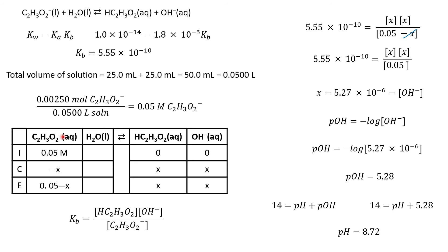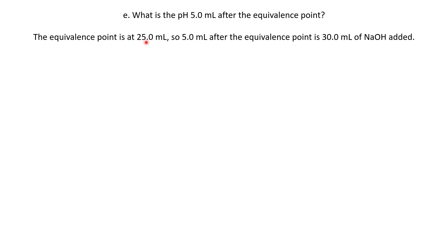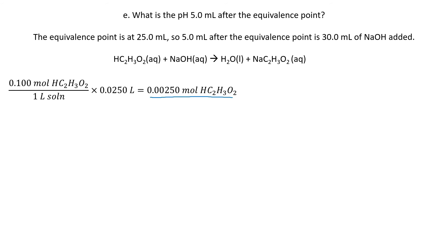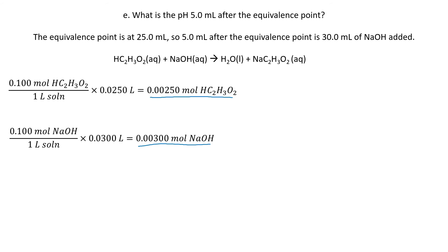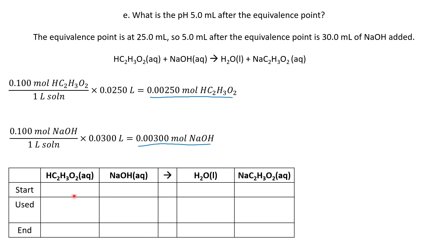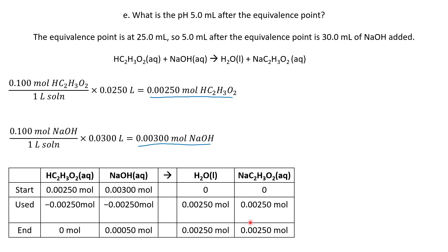What happens to pH after the equivalence point? We go 5 milliliters after — the equivalence point was at 25 milliliters, so we've added 30 milliliters of sodium hydroxide. Putting up my balanced chemical equation: I started with 0.0025 moles of acetic acid. How many moles of sodium hydroxide have I added? I've added 0.003 moles. Setting up my stoichiometry table, my acid is the limiting reagent — it goes to zero — I have a little base left over, and I've formed some product.